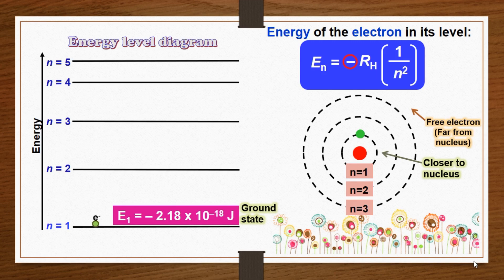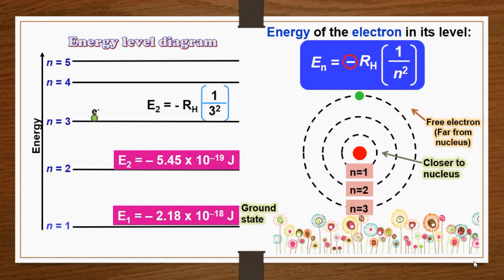The stability of the electron diminishes for n equals 2, 3, and so on. Each of these levels is called an excited state or excited level.